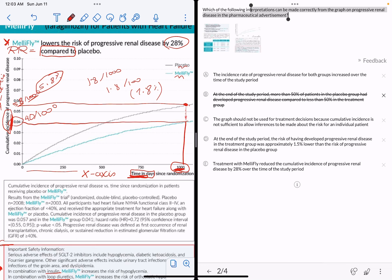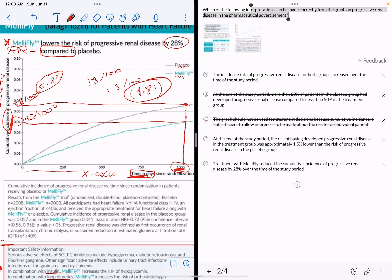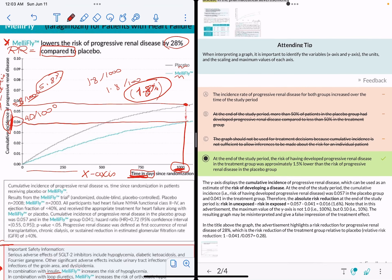At the end of the study period, the risk of having developed progressive renal disease in the treatment group was approximately 1.5% lower than the risk of progressive renal disease in the placebo group. And that's correct—we got it here at 1.8% less in the treatment group versus placebo. So this is the correct answer.